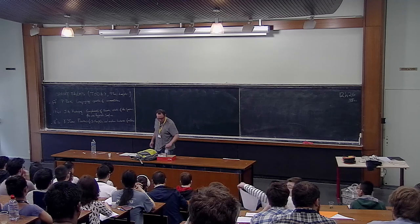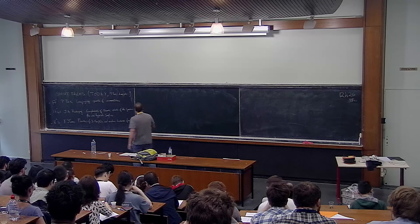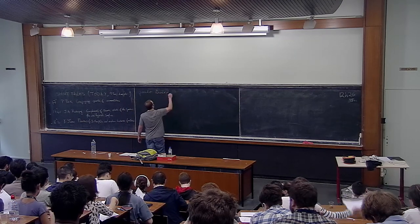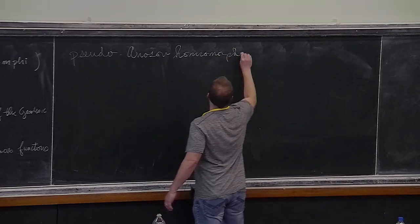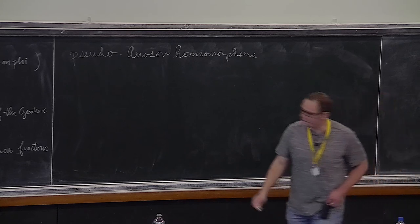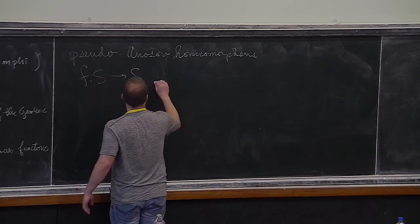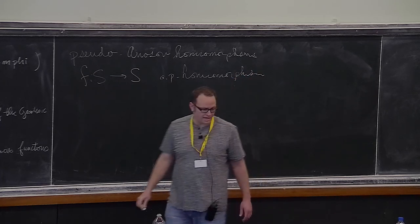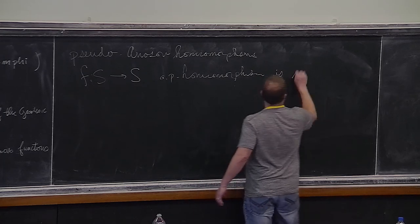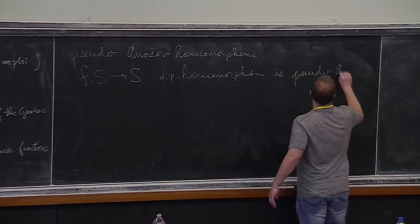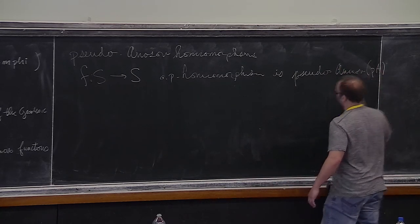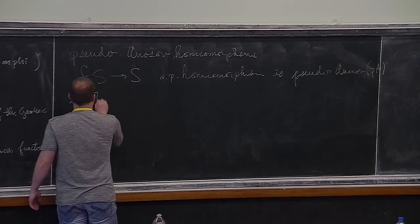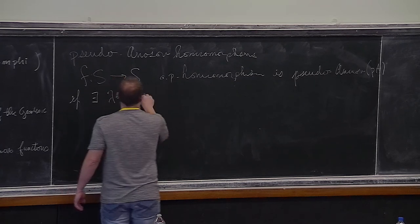We're going to talk about pseudo-Anosovs and in particular how they relate to Teichmüller geometry. Let me start with the definition. So, pseudo-Anosovs of homeomorphisms — what is that? Let's take F from S to S, an orientation-preserving homeomorphism. We say this is pseudo-Anosov if the following happens: there exists some number lambda, depending on F, bigger than 1.